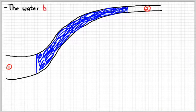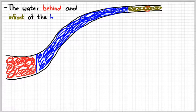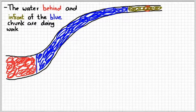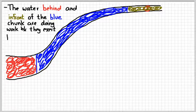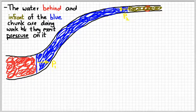Kind of redrawing my picture here. The thing that we have to remember is that the water behind and in front of the blue chunk of water are exerting pressure on it. Therefore, they're doing work on it. So because the red chunk behind and the green chunk in front of the blue chunk are pushing on it, as it moves, they're doing work on it. So I'm going to call that pressure P1 and I'm going to call that pressure up there P2.